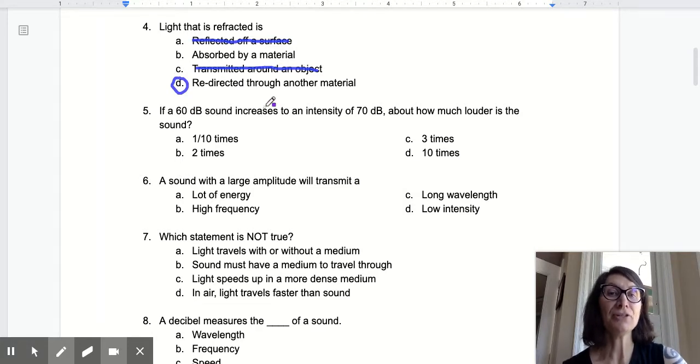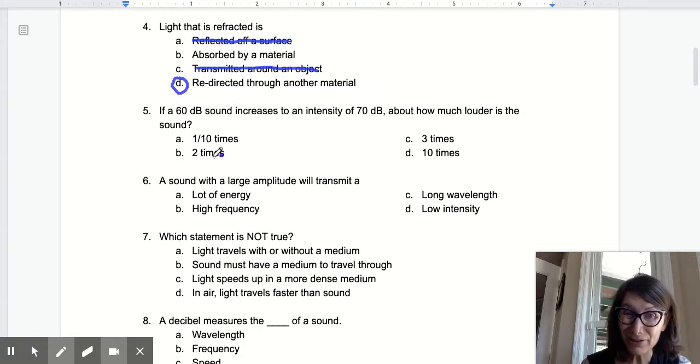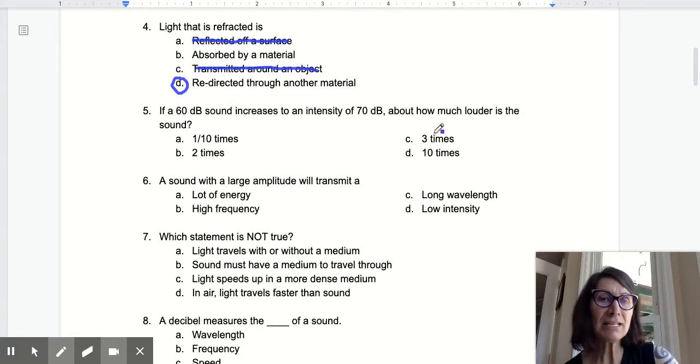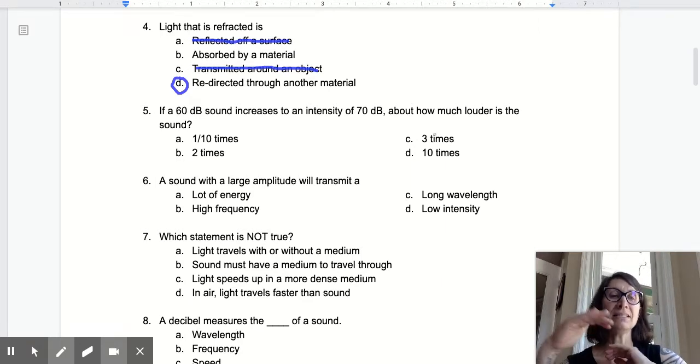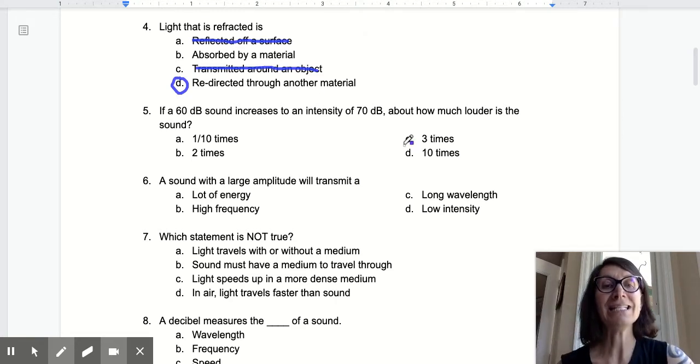If a 60 decibel sound increases to an intensity of 70, it went from 60 to 70, how much louder? Is it one? Is it one-tenth? Is it two times louder? Is it three times louder? We know that the intensity is a logarithmic by 10 times scale. And if I'm going from 60 to 70, that's one step. One step is 10 times louder.